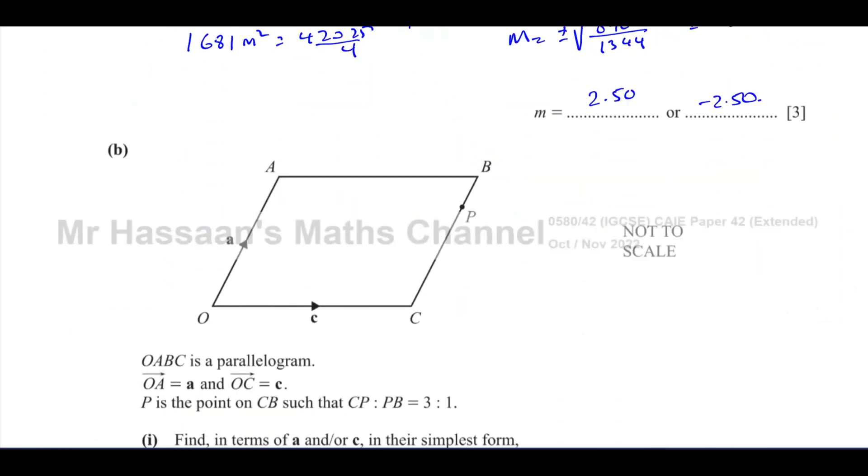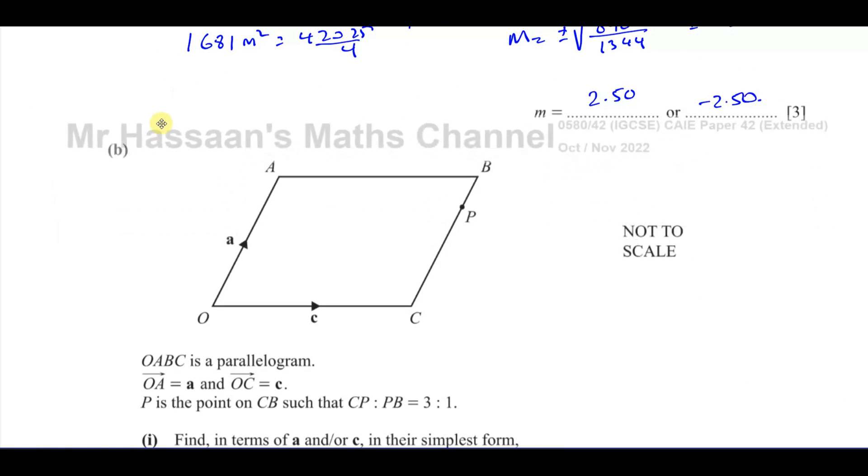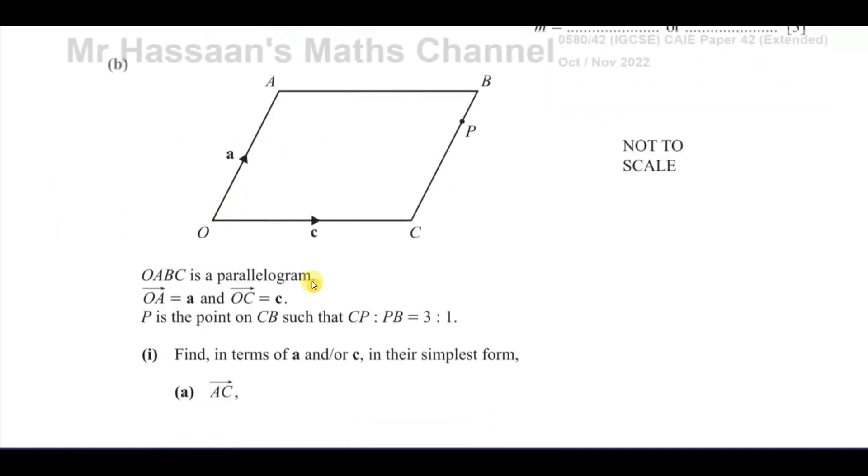Then part B. You have this diagram, this vector geometry diagram here. It's given you a parallelogram. So we know that the opposite sides are parallel and equal in length. So I can say OA and CB, and OC and AB are equal. It says P is the point such that C to P, the ratio of C to P to P to B is 3 to 1.